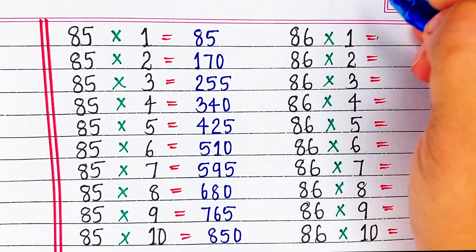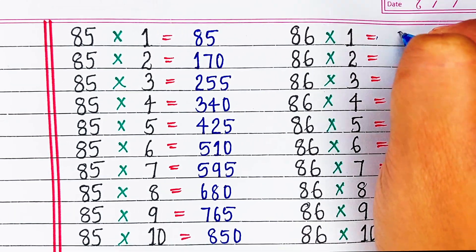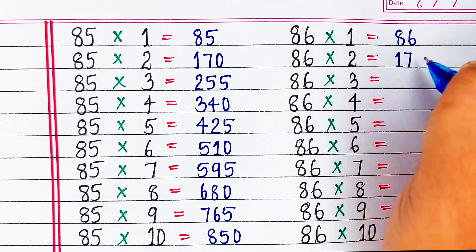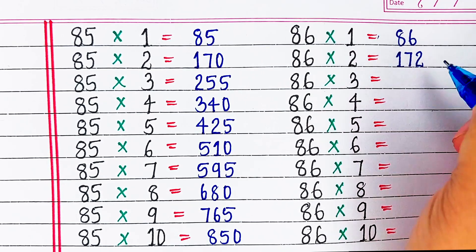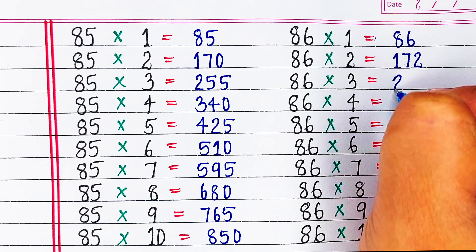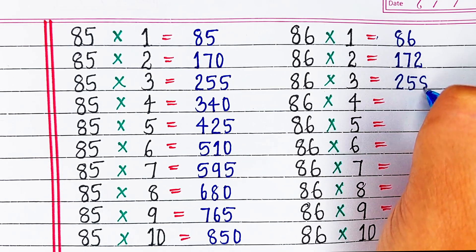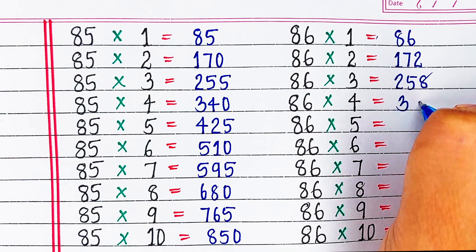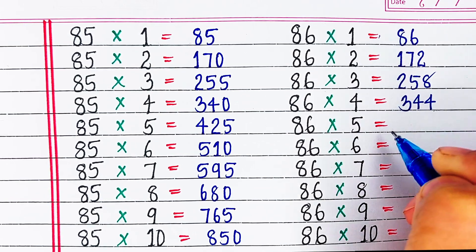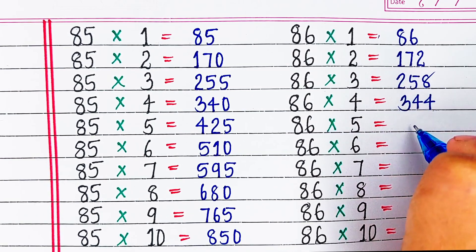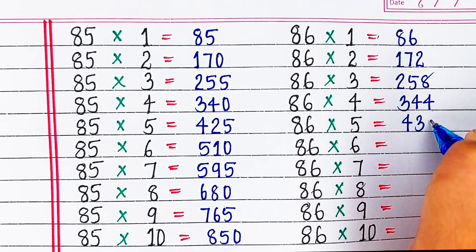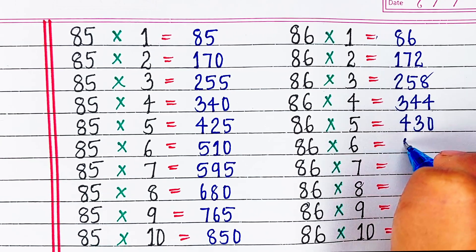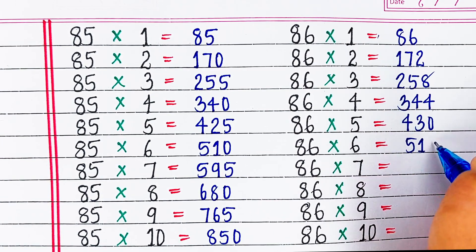Next is table of 86. 86 1s are 86, 86 2s are 172, 86 3s are 258, 86 4s are 344, 86 5s are 430.